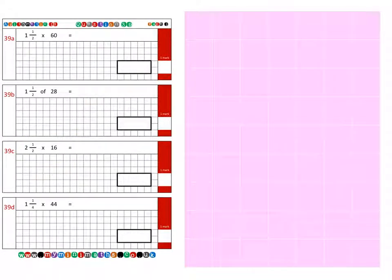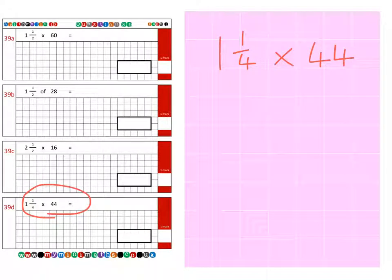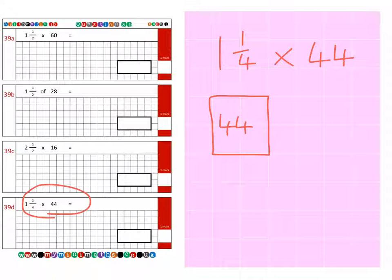And the last of today's questions, question 39D, which is one and a quarter lots of or multiplied by 44. So again if we take a full box of sweets that's 44 and then we take a quarter, so dividing the 44 by 4 gives us 11. Then we have a grand total of 55 sweets.